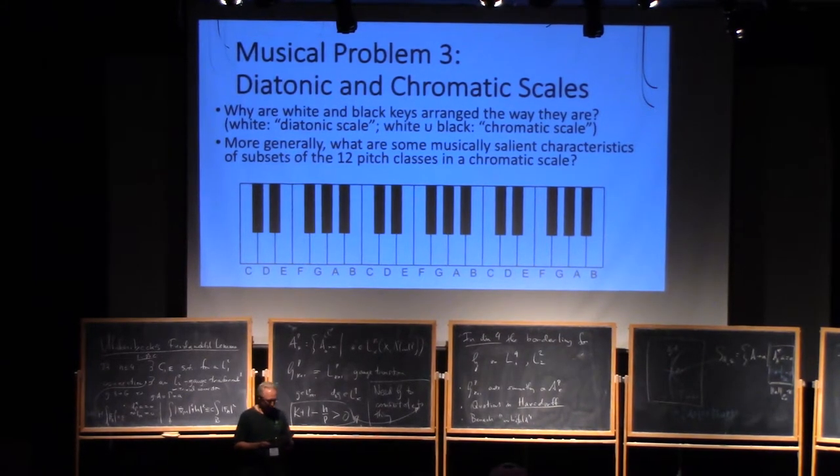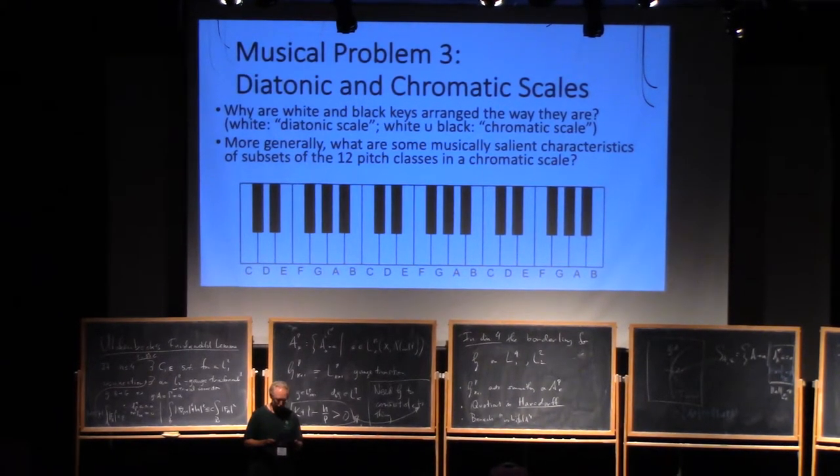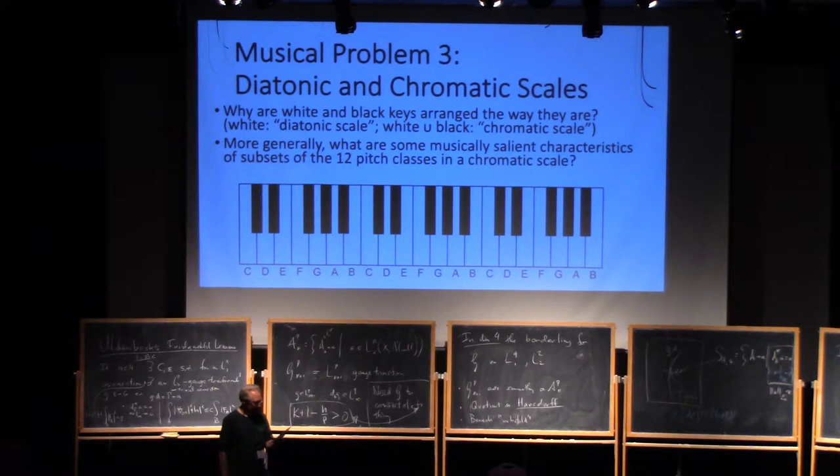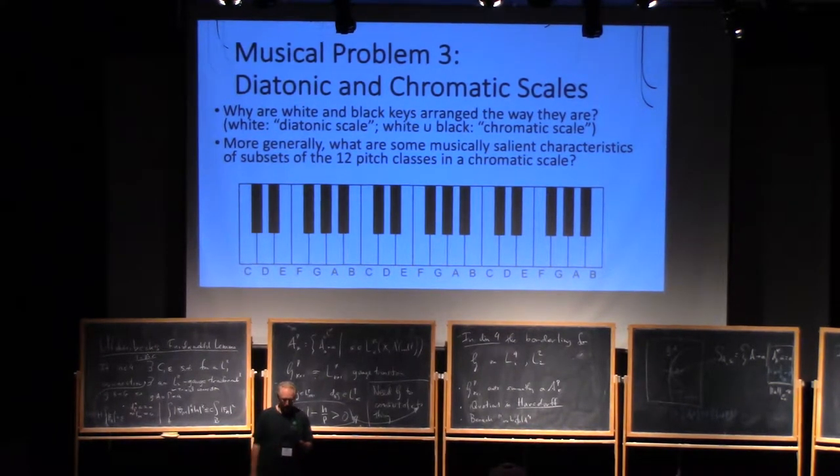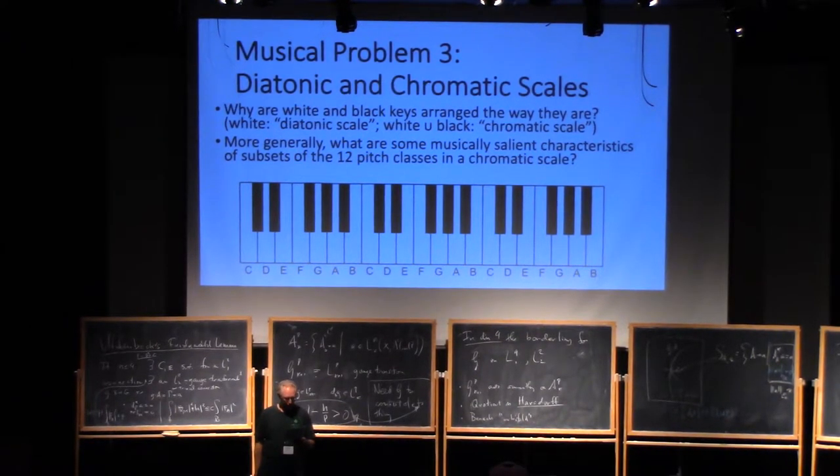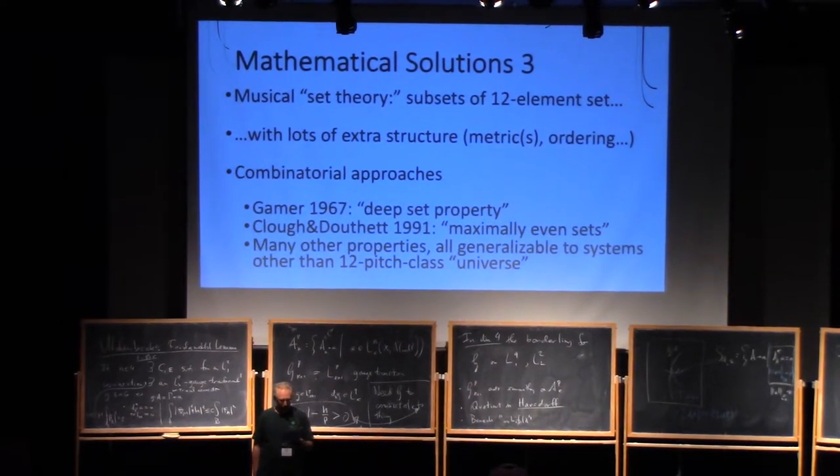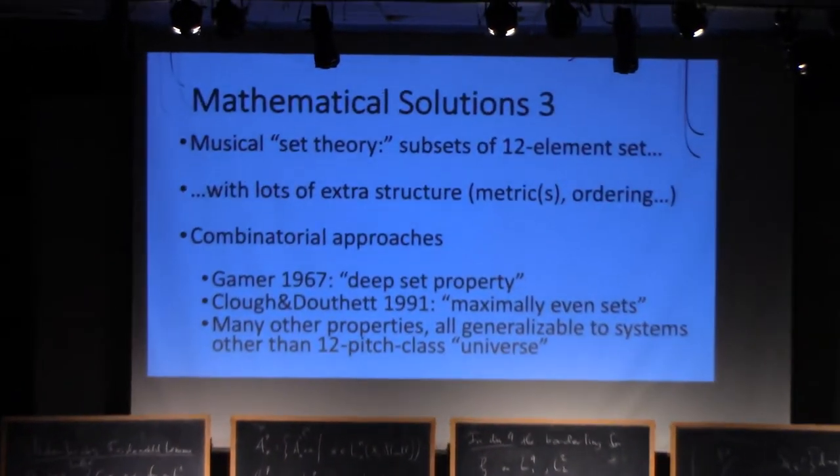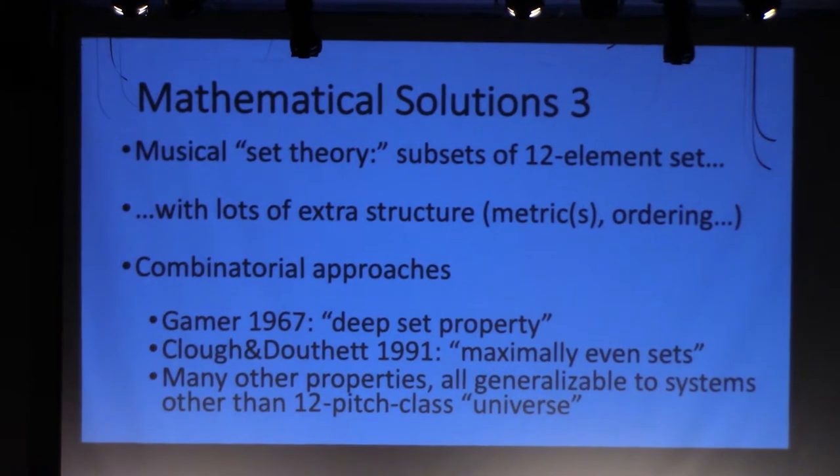Associated group actions and covering spaces are also useful. The seven white keys and five black keys in an octave on a piano keyboard occur in a peculiar pattern. Why? More generally, why are certain subsets of the 12 pitch classes preferred among composers as scales or chords?